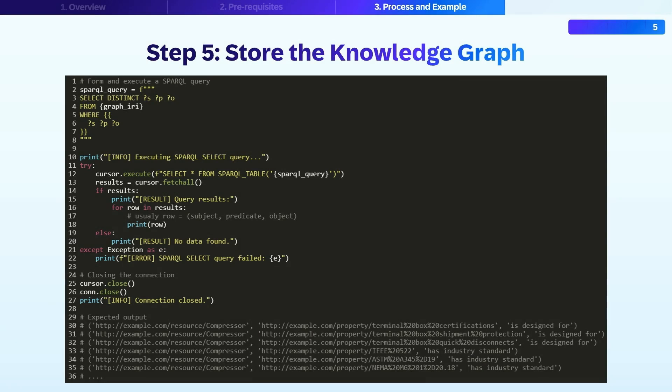The last step is useful for checking that the knowledge graph is saved correctly in HANA Cloud and for quickly obtaining insights before using the data in business applications. After loading the triples into SAP HANA, you can run SPARQL queries to validate and analyze the data. In this example, the query counts how many times each property appears in the graph. The script uses SPARQL table to execute the query and outputs the results so that you can verify the correctness of the data.